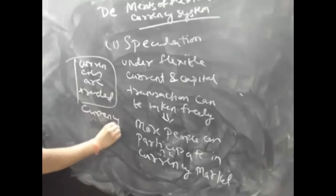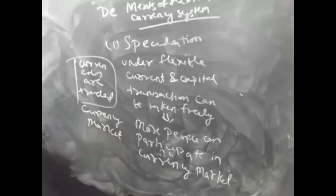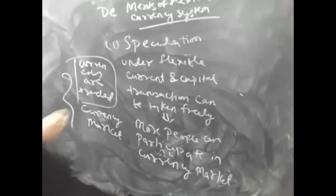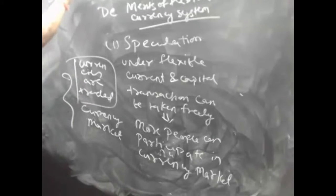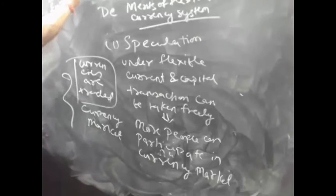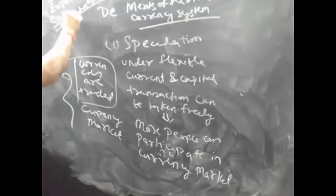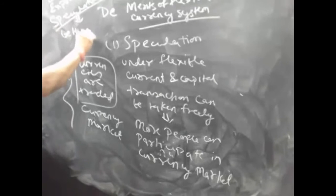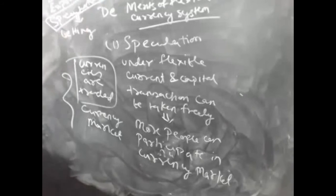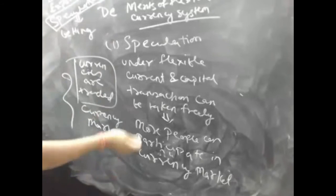When you follow a flexible currency system, more people can participate in the currency market. On a reasonable basis, only those with genuine foreign currency exposure should participate — importers need to sell rupees and buy foreign currency, while exporters receive dollars and need to sell dollars and buy rupees. However, there is a third category called speculators. Speculators are neither importers nor exporters; they are simply bettors who bet on whether the dollar will appreciate or depreciate, with no genuine foreign currency exposure — they neither receive nor have to pay any foreign currency.